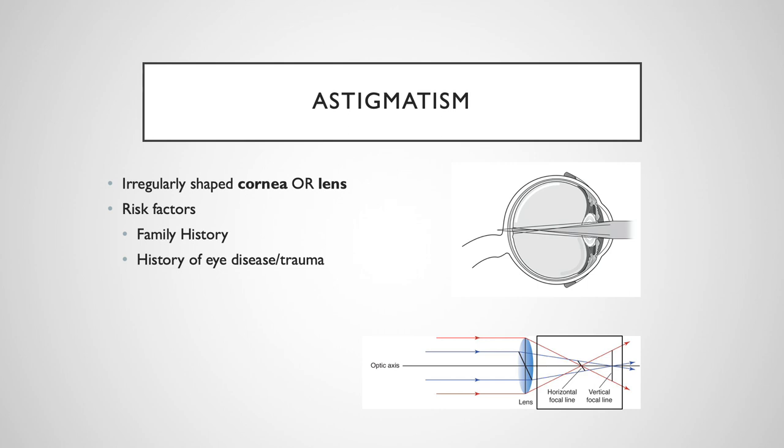Because near and far vision are affected, corrective lenses for astigmatism are cylindrical and will have three measurements depending on the presence of any myopia or hyperopia, the amount of astigmatism, which is based on the curvature of the cornea or lens, and location or axis of astigmatism. Some cases may require specialty corrective lenses or surgery to treat.